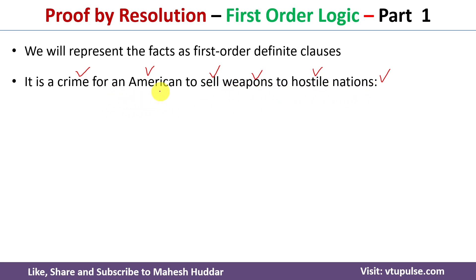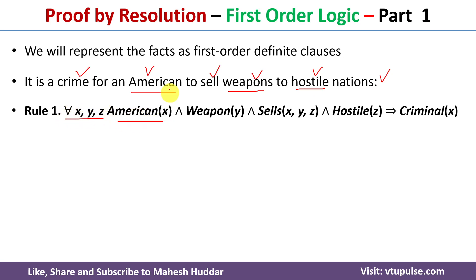We need three variables: x to indicate a person is an American, y to represent the weapon, and z to represent the hostile nation. So we write: for all x, y, z — American(x) ∧ Weapon(y) ∧ Hostile(z) ∧ Sells(x, y, z) → Criminal(x). The meaning is: if x is an American, y is a weapon, z is a hostile nation, and x sold y to z, then x is a criminal. This is rule number one.